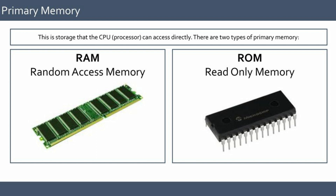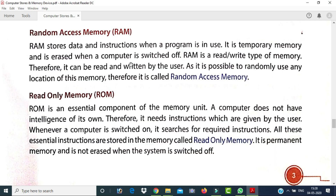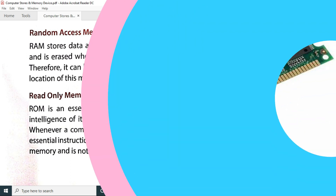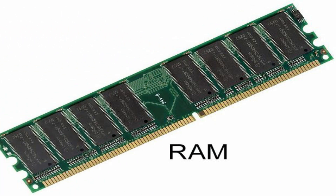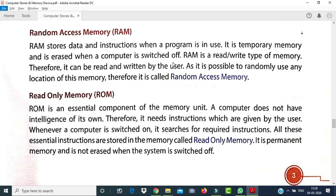RAM stands for Random Access Memory. RAM stores data and instructions when a program is in use — it is used when the computer is in a running state. It is temporary memory and is erased when the computer is switched off. RAM is a read-and-write type of memory, so data can be both read and written by the user. Any location of this memory can be accessed randomly, which is why it is called Random Access Memory.